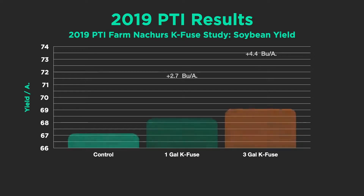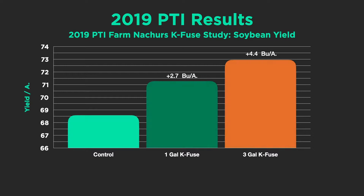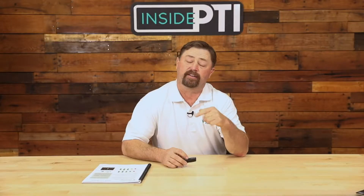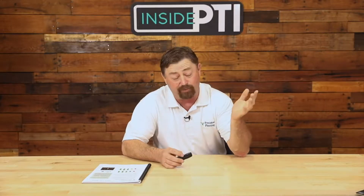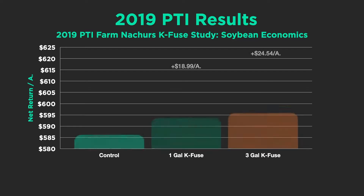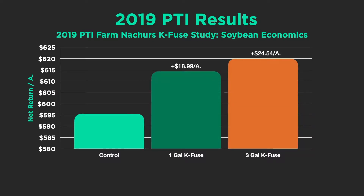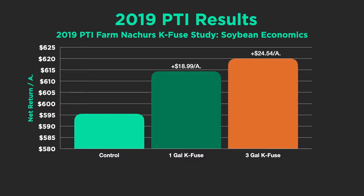We're also using K-Fuse on soybeans with some nice results. On beans we've lowered the rate to one to three gallons of K-Fuse. From 2019 data, we're seeing 2.7 to 4.4 bushel increases on soybeans. Taking the ROI into account, we're approaching twenty dollars per acre return on soybeans as well.